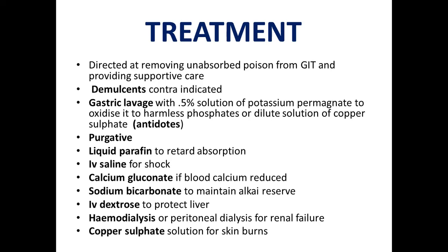Gastric lavage or stomach wash is done with a 1:5000 solution of potassium permanganate, which oxidizes phosphorus to harmless phosphates. If that is not available, gastric lavage can be performed with a dilute solution of copper sulphate — both may serve as antidotes of phosphorus. Purgatives can be given to remove it from the stools. Liquid paraffin can also be given to retard absorption, acting as a mechanical barrier instead of demulsants.